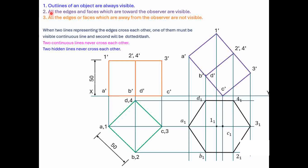Rule number 2: All edges and faces towards the observer are visible. For completing this view, the observer position is from the upper side. When observing from the arrow mark, two faces are present: one with nomenclature 1, 2, 3, 4 and another ABCD. Out of these two, face 1, 2, 3, 4 is nearer to the observer. So as per Rule 2, edges 1 to 2, 2 to 3, 3 to 4, and 4 to 1 are completely visible.